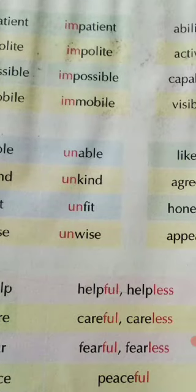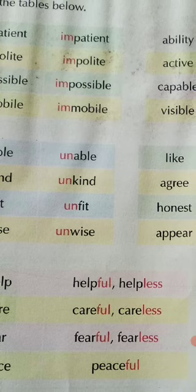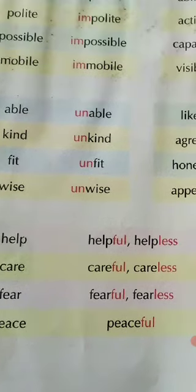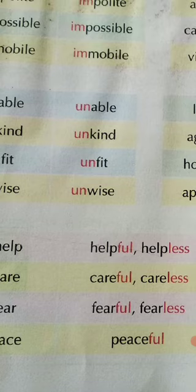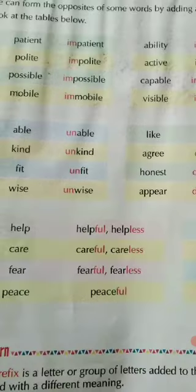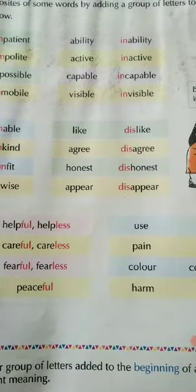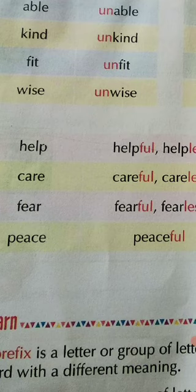Now it is important to know which prefix or suffix to add to which word. Here we see the prefix 'dis-' is used: like/dislike, agree/disagree, honest/dishonest, appear/disappear. So these are the group of letters we add to words to change their meaning.